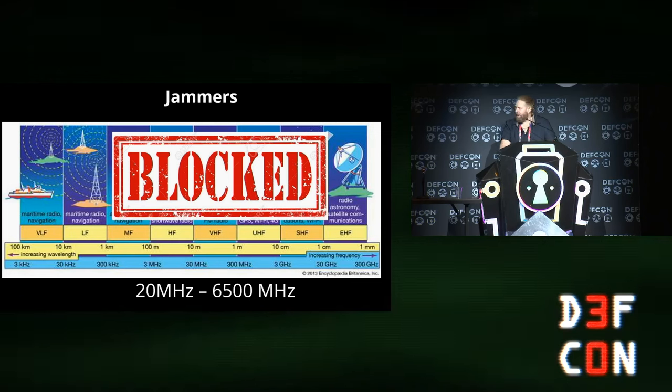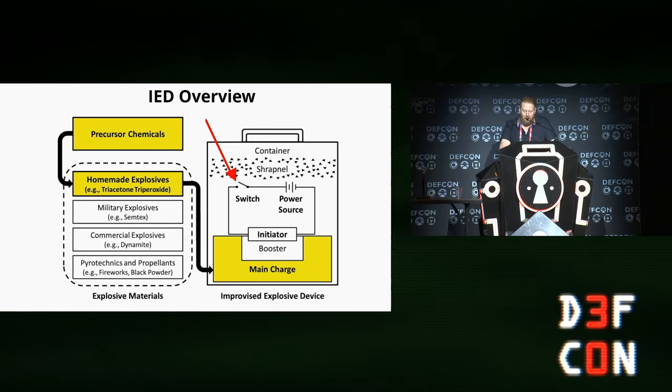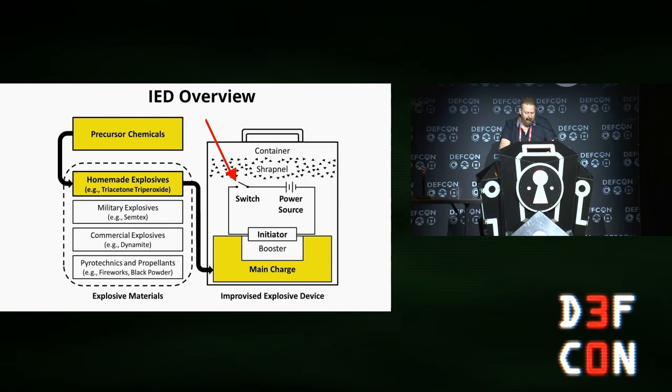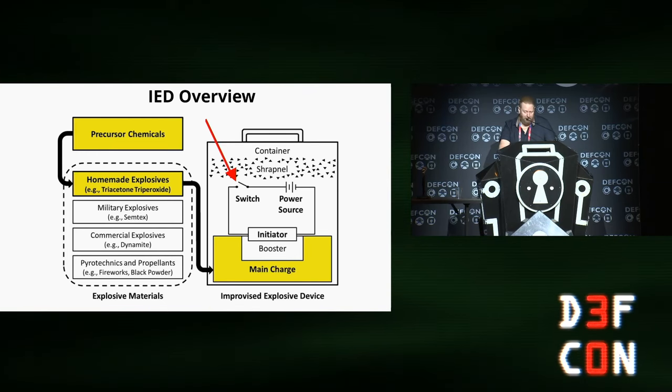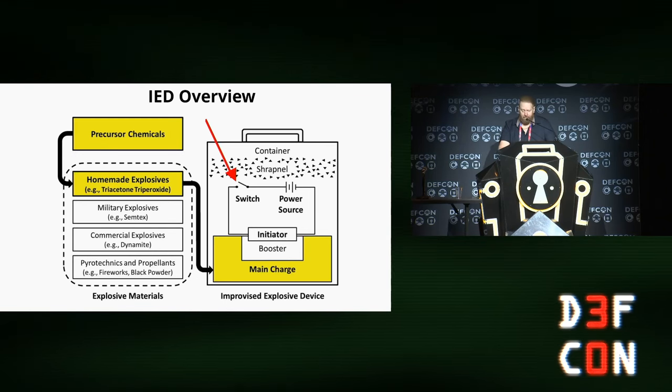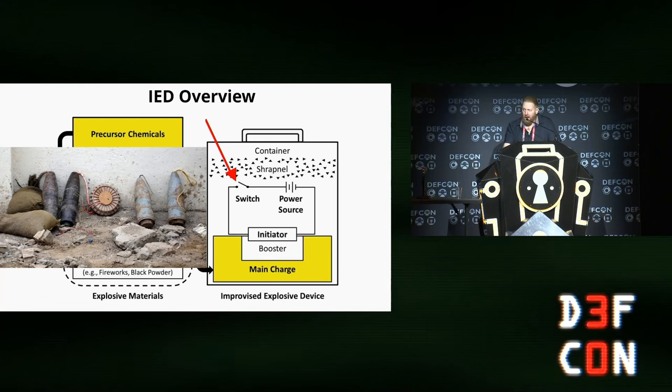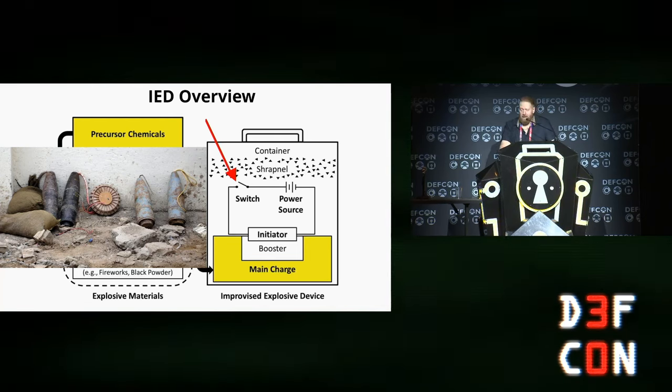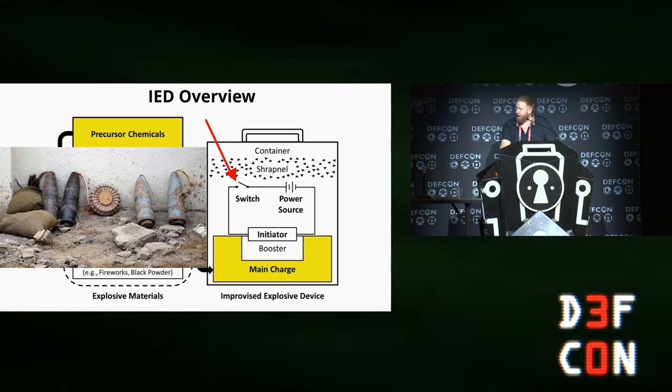So jammers effectively block anywhere between 20 megahertz and 6,500 megahertz. There is some specialist jammers that will block down to 1 megahertz, such as radio frequencies, but that's huge scale jam protection. They're static, not mobile. So I was interested in what's below 20 megahertz. Here's an example of an IED, how an IED is put together. We're going to focus on the switch component. We have a container, which essentially encompasses the IED. That can be anything, a cigar box, a steel box, a cow, a dead cow on the side of the road, or a vehicle. Obviously the shrapnel, the switch, the power source, and essentially the explosives down below. I'm only going to focus on the switch component.